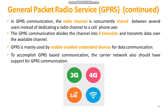GPRS is mainly used by mobile-enabled embedded devices for data communication, and the carrier network must also support GPRS communication. GPRS is an older technology and is being replaced by newer generation cellular data communication techniques like 3G, 4G, HSDPA, and LTE, which offer higher bandwidths. These are all the examples for the external communication interfaces.